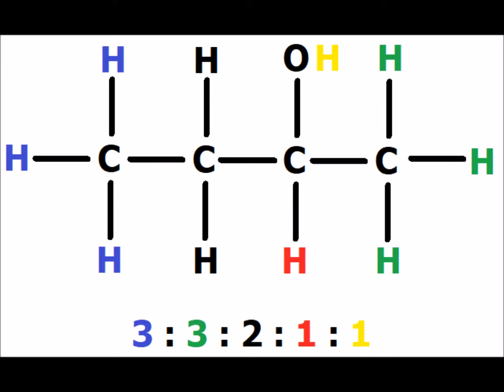We also have two methylene hydrogens shown in black, three green methyl hydrogens on the first carbon, and three blue methyl hydrogens on the fourth carbon. In 2-butanol, the two sets of methyl hydrogens are distinct because there is no mirror plane between the second and third carbon atoms of the chain. We therefore have ratios of 3 to 3 to 2 to 1 to 1.